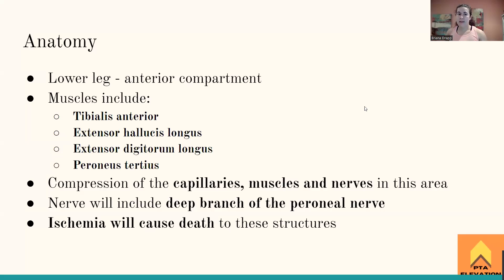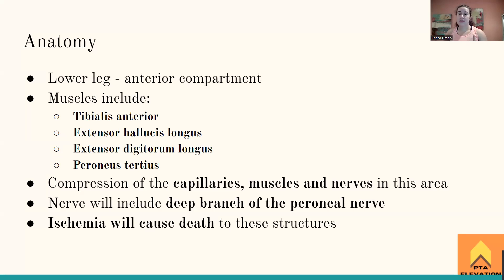Let's talk about the anatomy of the lower leg — specifically the front part. The muscles affected are the tibialis anterior, which is our primary dorsiflexor; the extensor hallucis longus, which extends our big toe; the extensor digitorum longus, which extends all the other toes; and the peroneus tertius, located on the anterior part of the ankle. These are the muscles affected by anterior compartment syndrome.